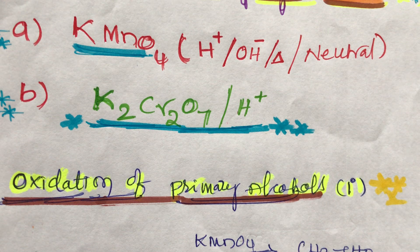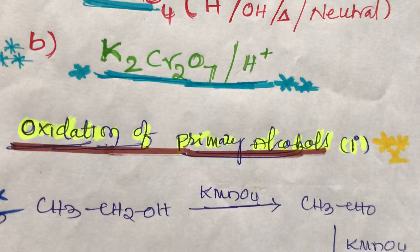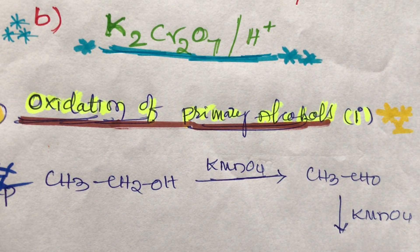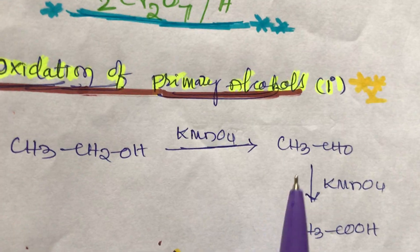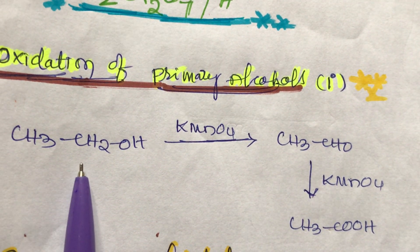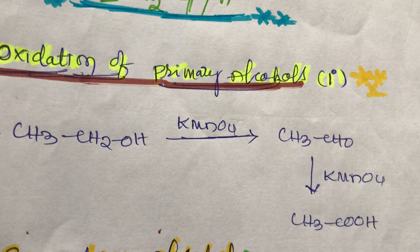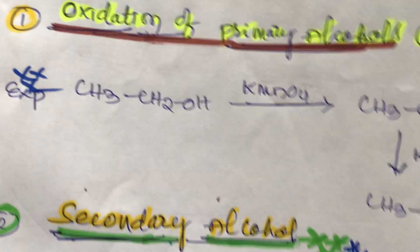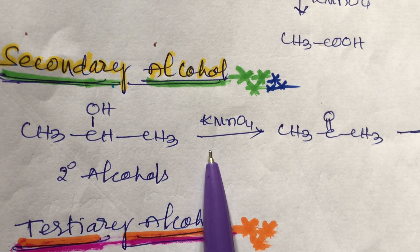These strong oxidizing reagents are mainly used for oxidation of alcohols. For primary alcohols, reaction with KMnO4 first gives aldehydes, and then the aldehyde is further oxidized to give carboxylic acids. So primary alcohols on oxidation with potassium permanganate give aldehydes and then carboxylic acids.